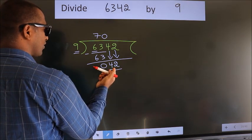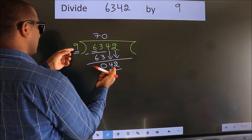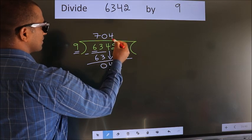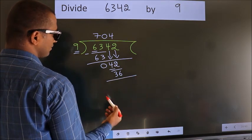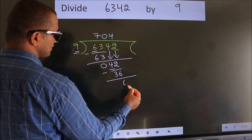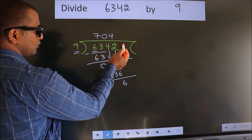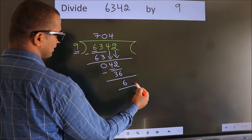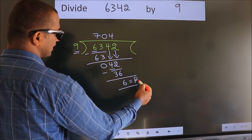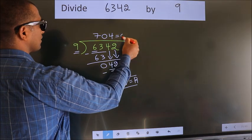A number close to 42 in 9 table is 9 fours 36. Now, we subtract. We get 6. No more numbers to bring it down. So, we stop here. This is our remainder. This is our quotient.